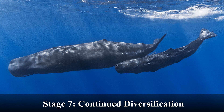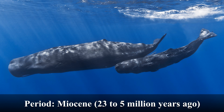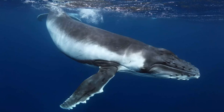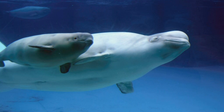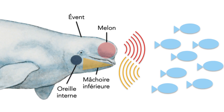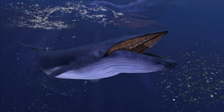Stage 7: Continued Diversification. Period: Miocene, 23 to 5 million years ago. During the Miocene epoch, both Odontocetes and Mysticetes continued to diversify. New species of whales emerged, each with unique adaptations for their specific ecological niches. Odontocetes developed complex echolocation systems for hunting and communication, while Mysticetes grew larger and more efficient at filter feeding.